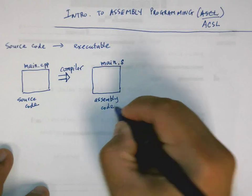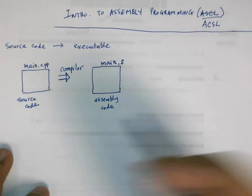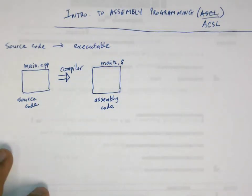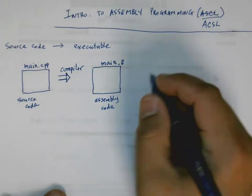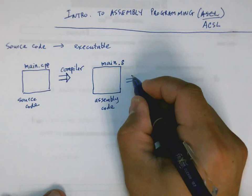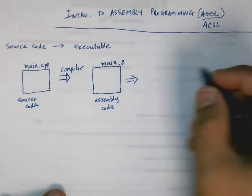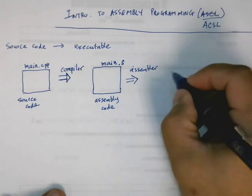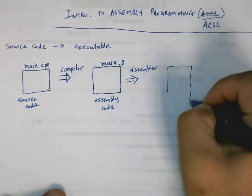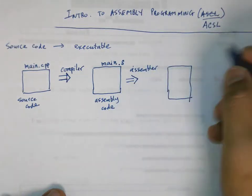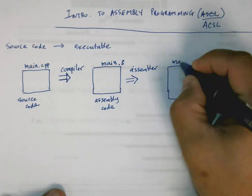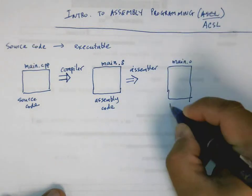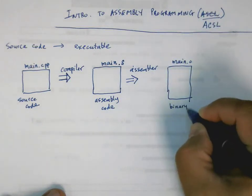There's actually one more step in here called the preprocessor, but I'm not going to get into that right now. After that, the assembly code goes through another process called the assembler. The assembler produces a binary file—this will be like main.o. This is a binary file, all ones and zeros.